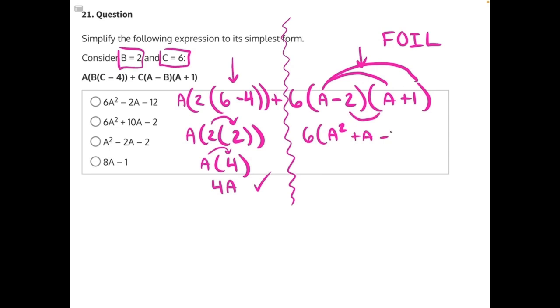Then our inner terms, negative 2A, and our outer terms, or excuse me, our last terms, negative 2 times 1 would give us a negative 2.